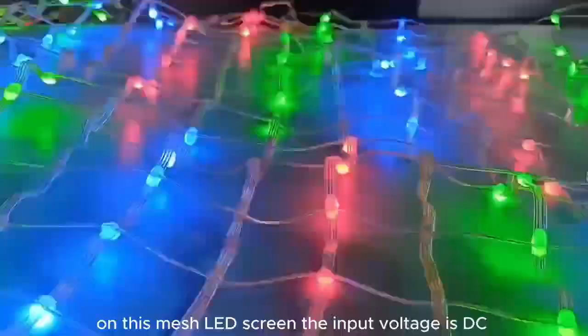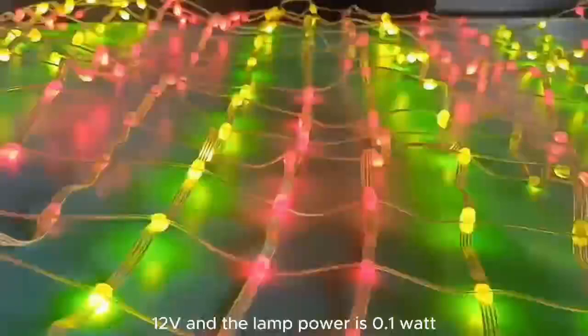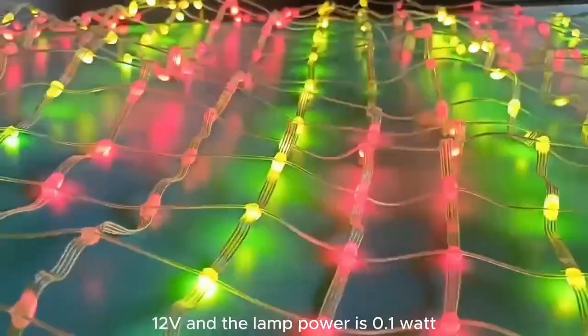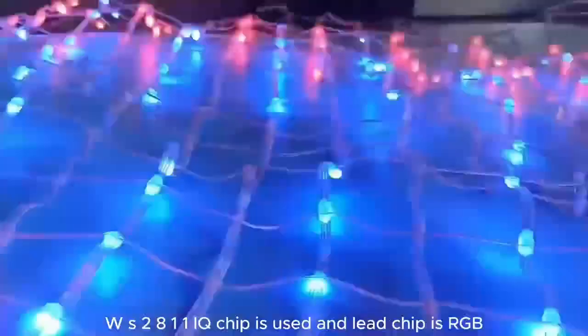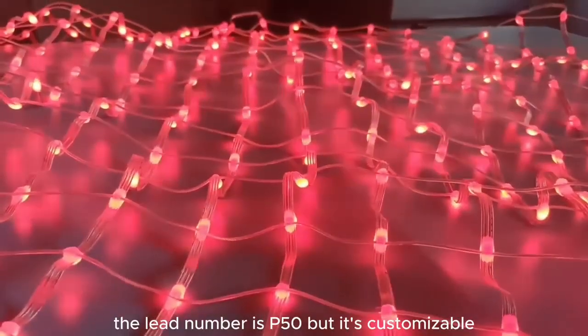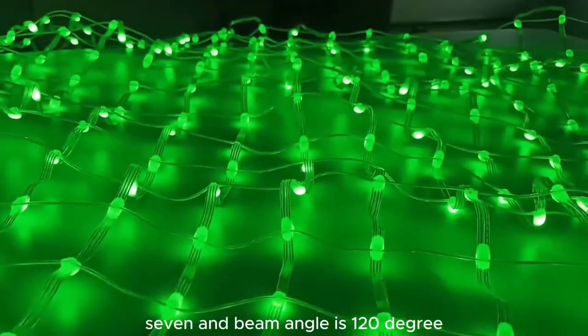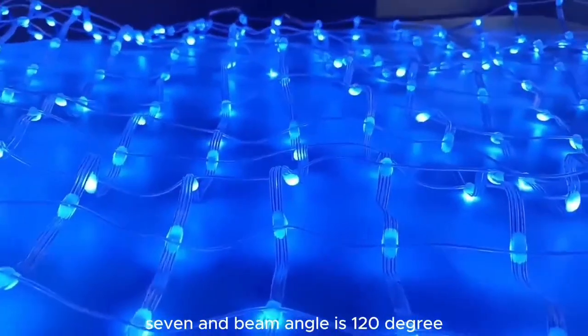On this mesh LED screen, the input voltage is DC12V and the lamp power is 0.1 watt WS2811. A chip is used and LED chip is RGB. The LED number is P50 but it's customizable. The IP rating is IP67 and beam angle is 120 degree.